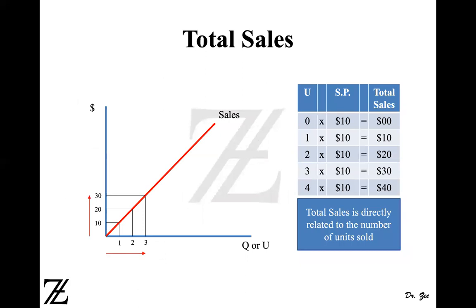Now let's move on to the total sales graph. The total sales graph looks just like a total variable cost graph — total sales has a direct relationship with the quantity sold. The more units you sell, the higher your total sales. This graph depicts that relationship: when you're selling zero units, your total sales is zero. As you sell more units, total sales increases. When you sell one unit you have $10, two units gives $20, and so on. So the total sales graph is an upward sloping graph.